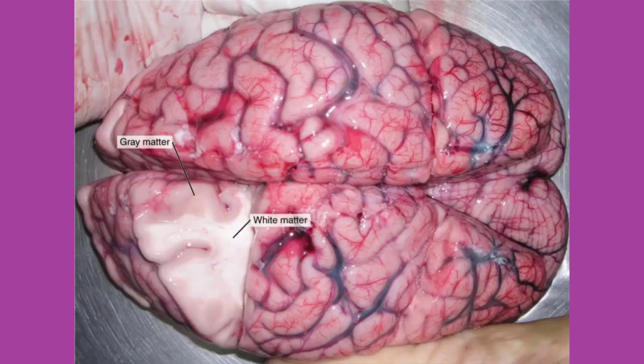Looking at the nervous tissue, there are regions that predominantly contain cell bodies and regions that are largely composed of axons. These two regions within the nervous system structures are often referred to as gray matter — the regions with many cell bodies and dendrites — or white matter, the regions with many axons. The colors ascribed to these regions are what would be seen in fresh or unstained nervous tissue. Gray matter is not necessarily gray, but it can be pinkish because of blood content, or even slightly tan, depending on how long the tissue has been preserved. But white matter is white because axons are insulated by a lipid-rich substance called myelin.